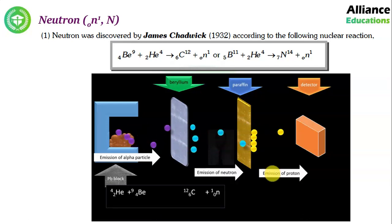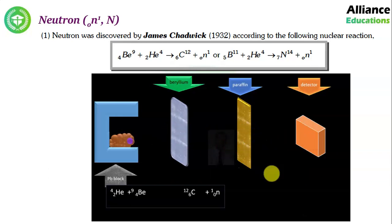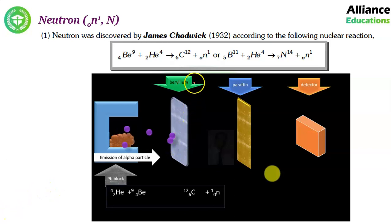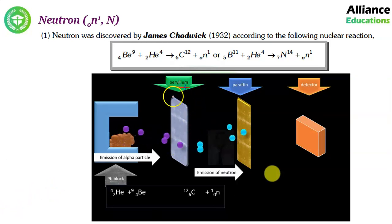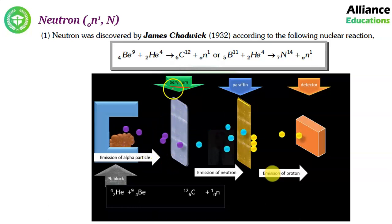A nuclear reaction was performed by James Chadwick and on the basis of that, the neutron was discovered in 1932.